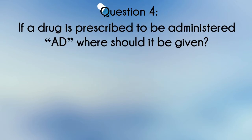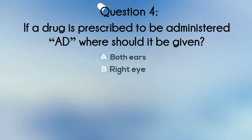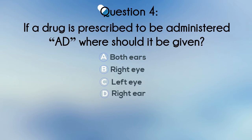Question 4. If a drug is prescribed to be administered AD, where should it be given? A. Both ears, B. Right eye, C. Left eye, or D. Right ear.